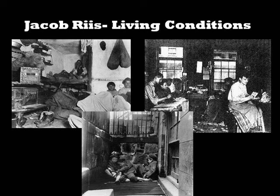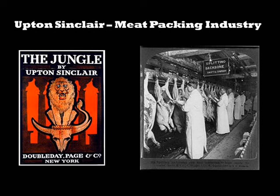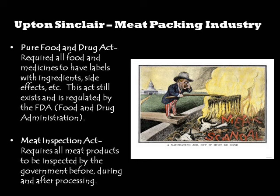Last, and certainly not least, is the book The Jungle, written by Upton Sinclair in 1906. The Jungle investigates the dangerous working conditions and unsanitary procedures in the meatpacking industry of Chicago. This led to a couple of different pieces of legislation to reform the food industry. The first, coming in 1906, was the Pure Food and Drug Act, which required all food and medicines to have labels with ingredients, side effects, and other things. This act still exists and is regulated by the FDA, the Food and Drug Administration. It also led the way for the Meat Inspection Act of 1906, which requires all meat products to be inspected by the government before, during, and after processing.